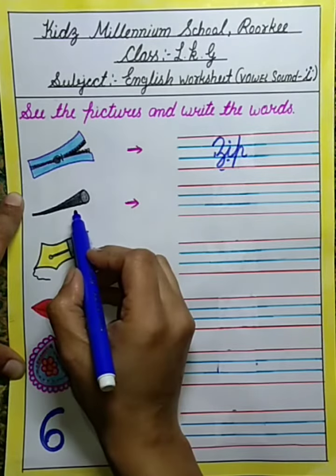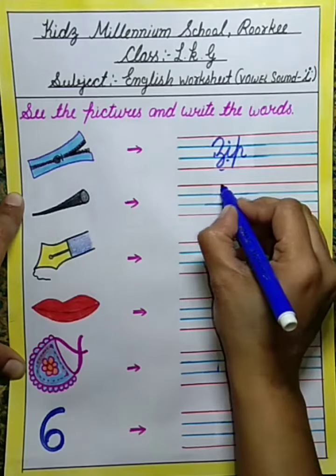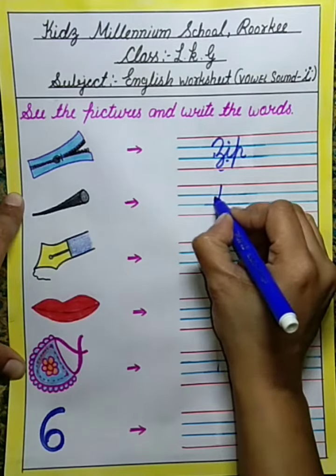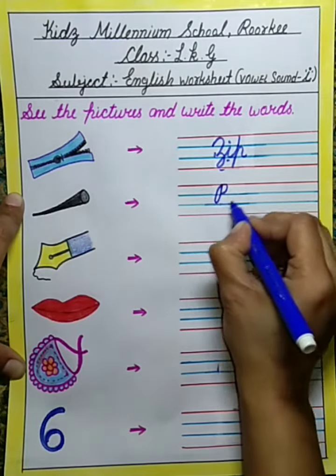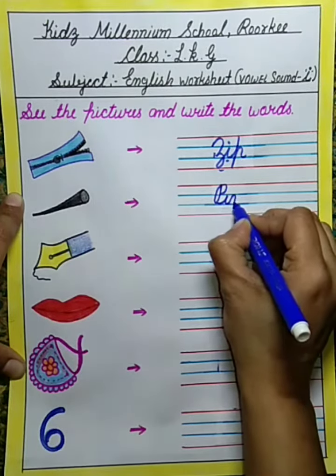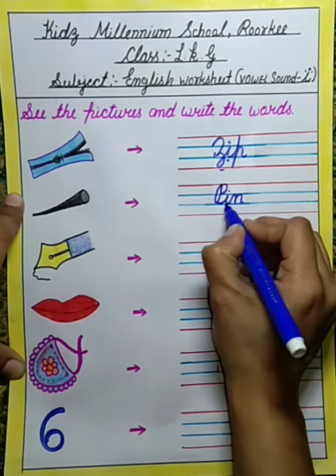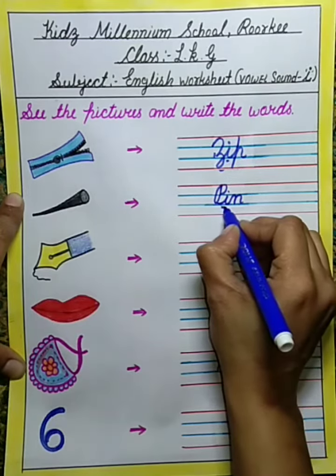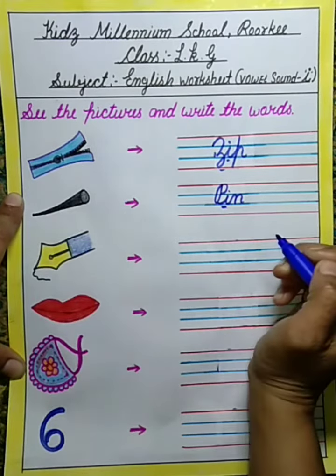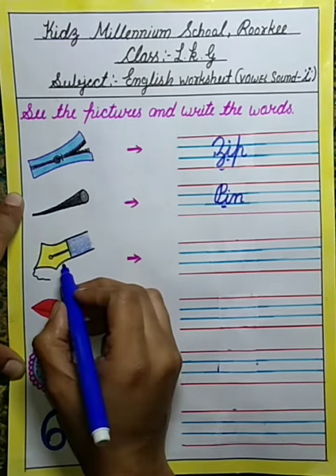This is pin. P, I, N. Pin. Here, I is a vowel.